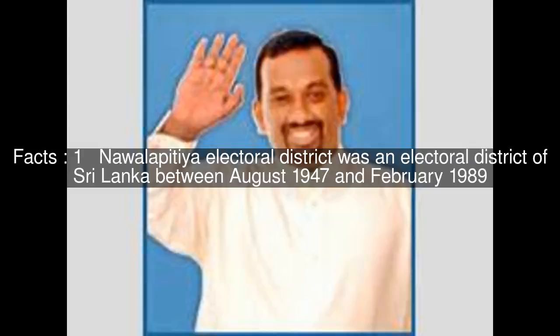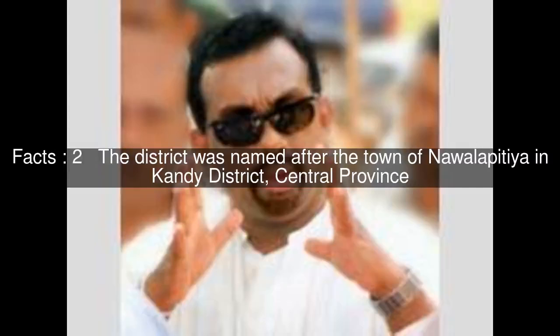Nawalipitya electoral district was an electoral district of Sri Lanka between August 1947 and February 1989. The district was named after the town of Nawalipitya in Kandy district, central province.